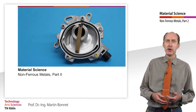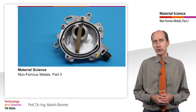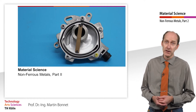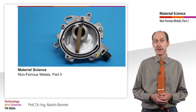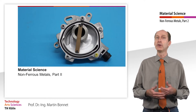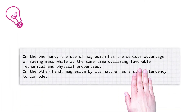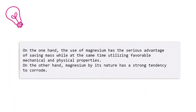Magnesium or magnesium alloys are only occasionally used as a construction material, for example in the automotive industry, due to their even lower density compared to aluminum. On the one hand, the use of magnesium has a serious advantage of saving mass, while at the same time utilizing favorable mechanical and physical properties.